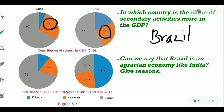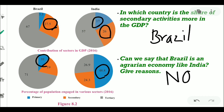Can we say that Brazil is an agrarian economy like India? No. India has 48.8% of its population engaged in primary activities whereas Brazil has only 10%. Also, the contribution of primary activities in India's GDP is 17% whereas in Brazil it is only 5.5%. That's why we cannot say that Brazil is an agrarian economy just like India.